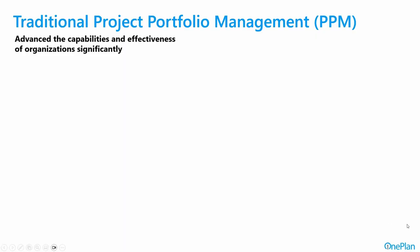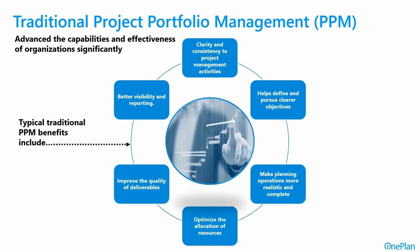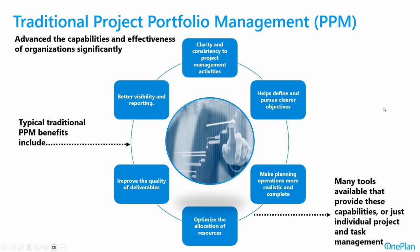Traditional project portfolio management, which we've talked about in the past, has really advanced us to better things within our organizations over the last handful of decades. It has delivered traditional benefits: better clarity and visibility, clearer objectives, more complete planning, optimization of resources and allocations, better visibility and reporting, et cetera. And there's quite honestly a myriad of tools available that do basic project management, maybe simple portfolio management, and just basic task management — a plethora of tools out there.